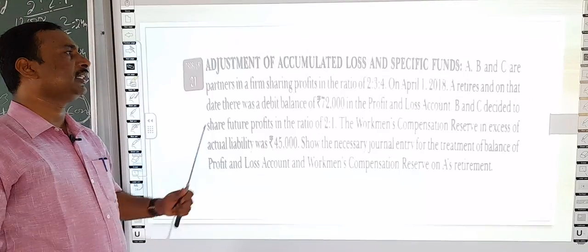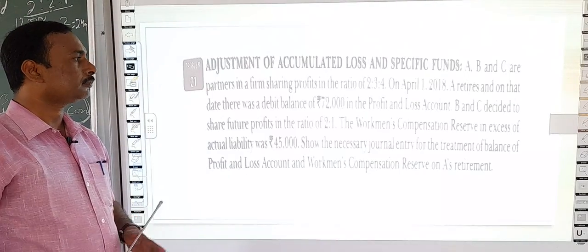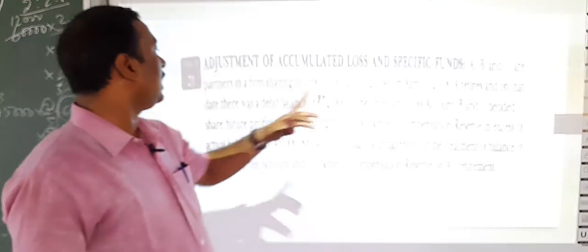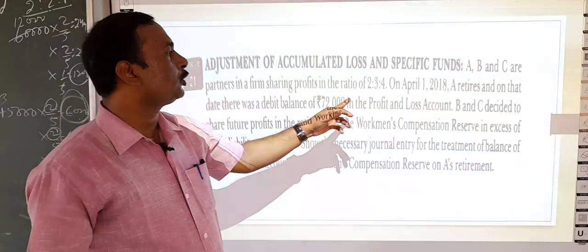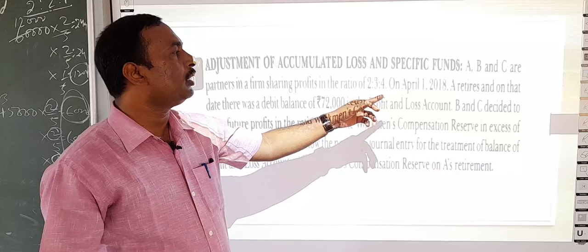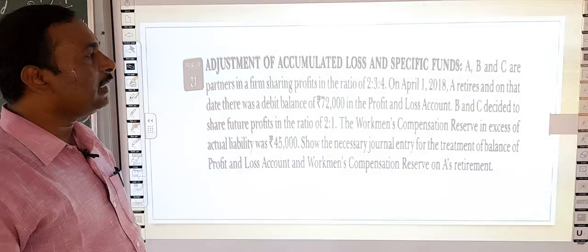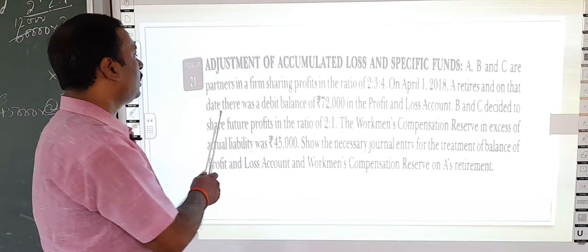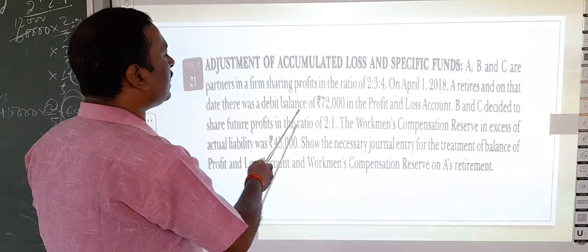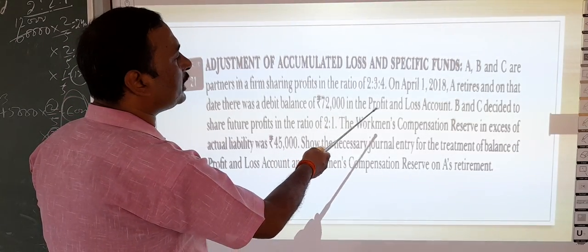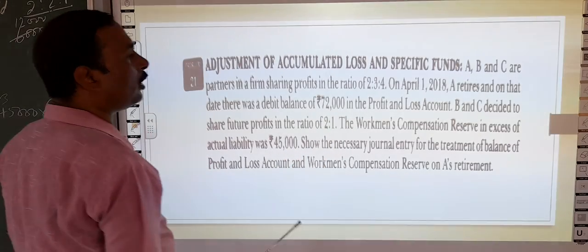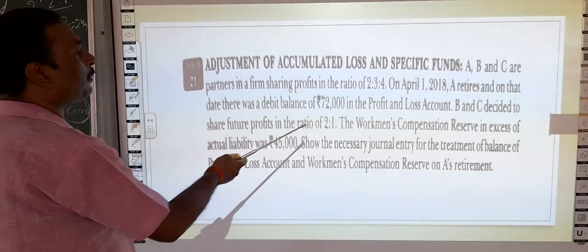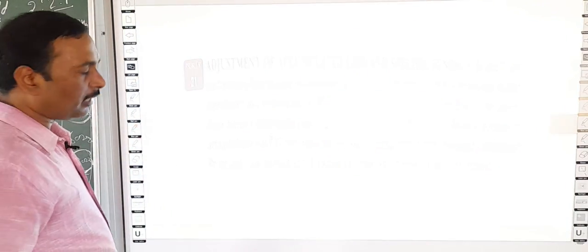This is related to a question. The question is: A, B, and C are partners sharing profits in the ratio of 2:3:4. On 1st April 2018, A retires. On that date there was a debit balance of 72,000 in the Profit and Loss account. B and C will share future profits in the ratio of 2:1.